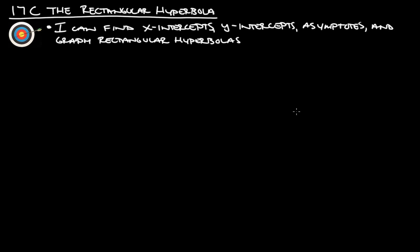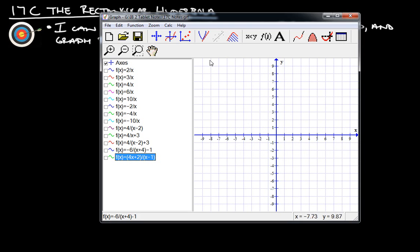Hello, this is Mr. Stansberry. I'm going to take you through the 17c notes on the rectangular hyperbola. At the end of this you should be able to say: I can find x-intercepts, y-intercepts, asymptotes, and graph rectangular hyperbolas. So first thing we're going to do is actually look at the graphing program and take a look at a bunch of different rectangular hyperbolas.